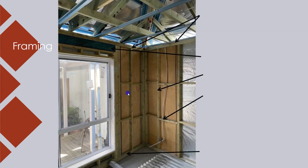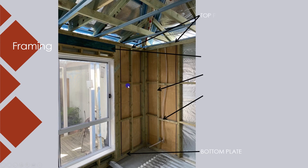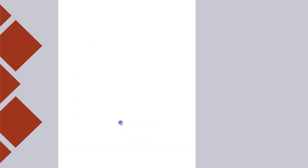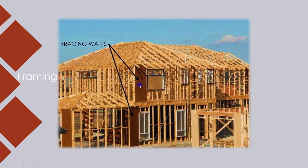The wall frame consists of top and bottom plates, studs, noggings, and beams at the openings called lintels. Besides gravity loads, this lightweight framing also needs to withstand wind loads, and these lateral loads are distributed between bracing walls by the floor diaphragms and then down to the ground. You can see in this image structural plywood that provides bracing to the building against wind loads.